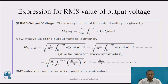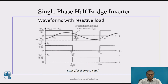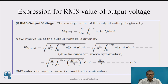Expression for RMS value of output voltage. The average value of the output voltage is given by E0_avg = (1/2π) ∫₀²π E0(ωt) dωt. In the duration 0 to π, the positive half cycle appears, and from π to 2π the negative half cycle appears. Therefore E0_rms = √[(4/2π) ∫₀^(π/2) E0² dωt], which gives E0_rms = Edc/2. The RMS value of the square wave equals its peak input value. Therefore the RMS value for the single-phase half bridge inverter is equal to the supply voltage Edc/2.